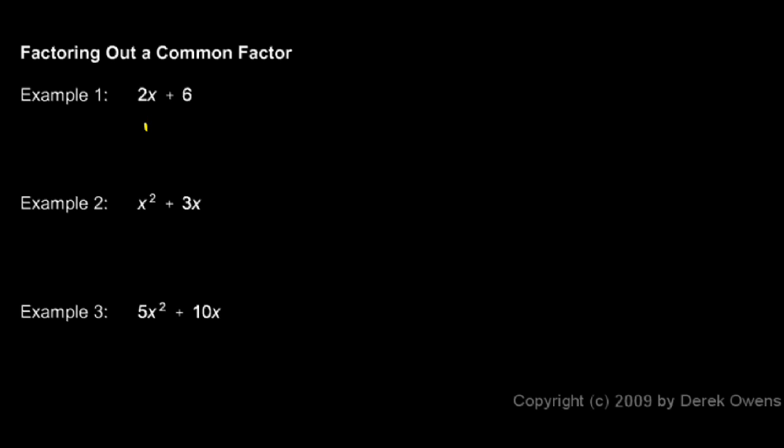It's pretty clear that there's a 2 and an x in that term. This term, 6, can be thought of as 2 times 3. So in other words, both terms have a factor of 2, and we can factor that out. I can write this as 2 times x plus 3.